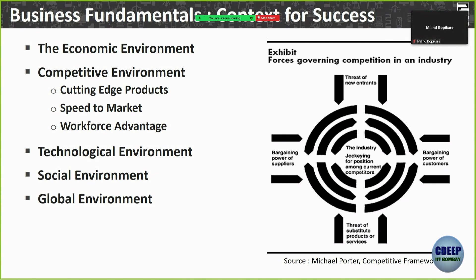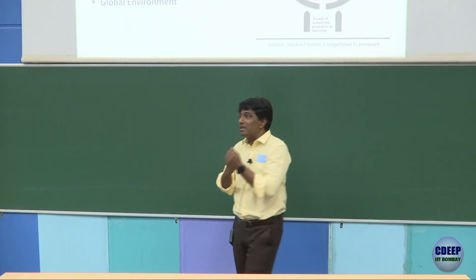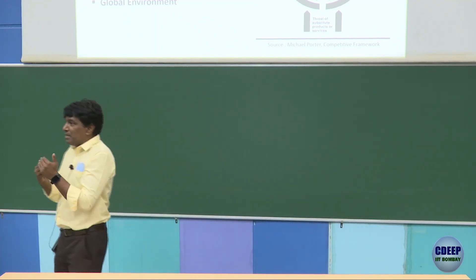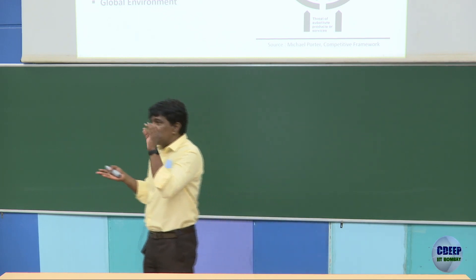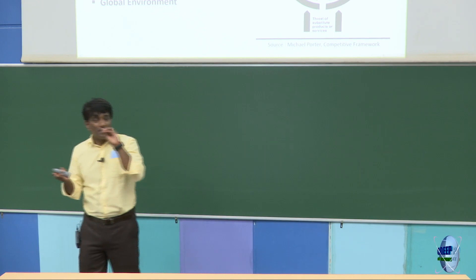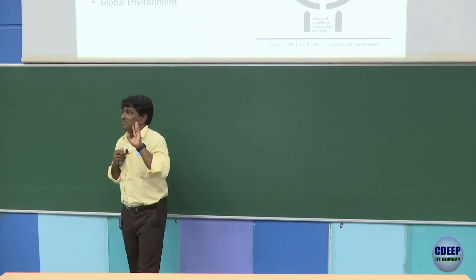To constantly stay on top of things, you need: cutting-edge products — as novel and technologically advanced as possible. Second is speed to market — the window is very thin. Steve Jobs once said he had been hearing Bill Gates talk of a touchscreen, but hadn't seen it — then in less than one year he launched the iPad. In the real world, you have one to two years to launch your product or else it's gone. Two years ago everyone was saying blockchain repeatedly, and now it's already old.